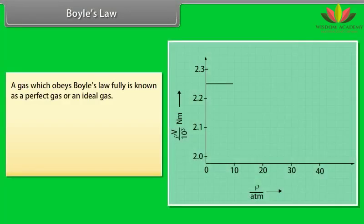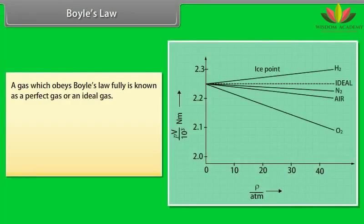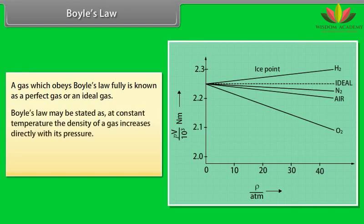A gas which obeys Boyle's law fully is known as perfect gas or an ideal gas. Boyle's law may be stated as at constant temperature, the density of a gas increases directly with its pressure. P upon rho is equal to constant.